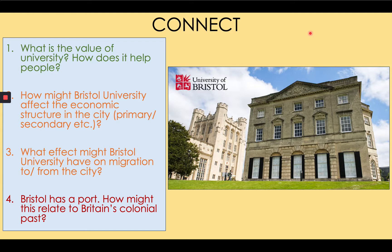Question one: what is the value of university and how does it help people? University gives people advanced skills, for example in maths, computing, medicine, law, or any other degree subject. These skills allow people to get better jobs as adults or to start businesses. Consequently, it increases their incomes and so their standard of living improves.